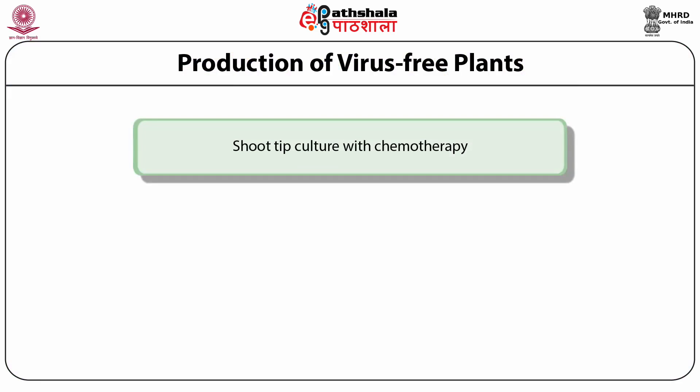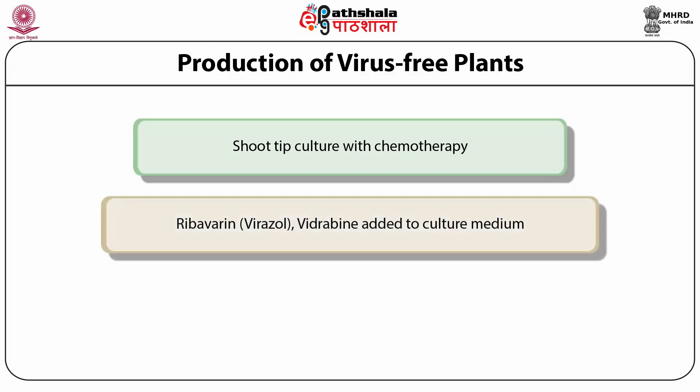The procedure followed is: the mother plants are heat treated (thermotherapy), then nodal segments are taken and cultured. When shoots develop from these nodal segments, shoot tip cultures are raised from these aseptic shoots to raise the virus-free plants. As for chemotherapy, in culture, the shoot tip culture has been combined with virucidal compounds such as virazole or ribavirin added to the culture medium.